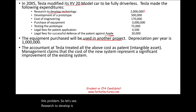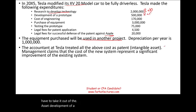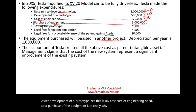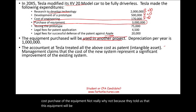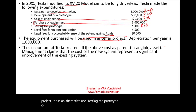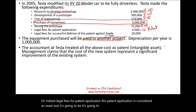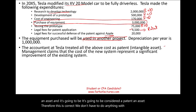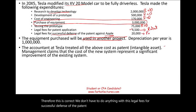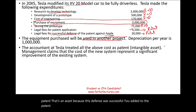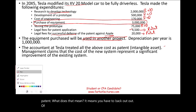Let's go through each item. Research to develop technology: yes, this is R&D — take it out of the asset. Development of a prototype: yes, R&D cost. Cost of engineering: R&D cost. Purchase of equipment: not R&D, because they told us this equipment will be used in another project — it has an alternative use. Testing the prototype: R&D. Legal fees for patent application: no — patent application is considered an asset, a patent, so this is correct. Legal fees for successful defense of the patent: also an asset, because the defense was successful — you add it to the patent.